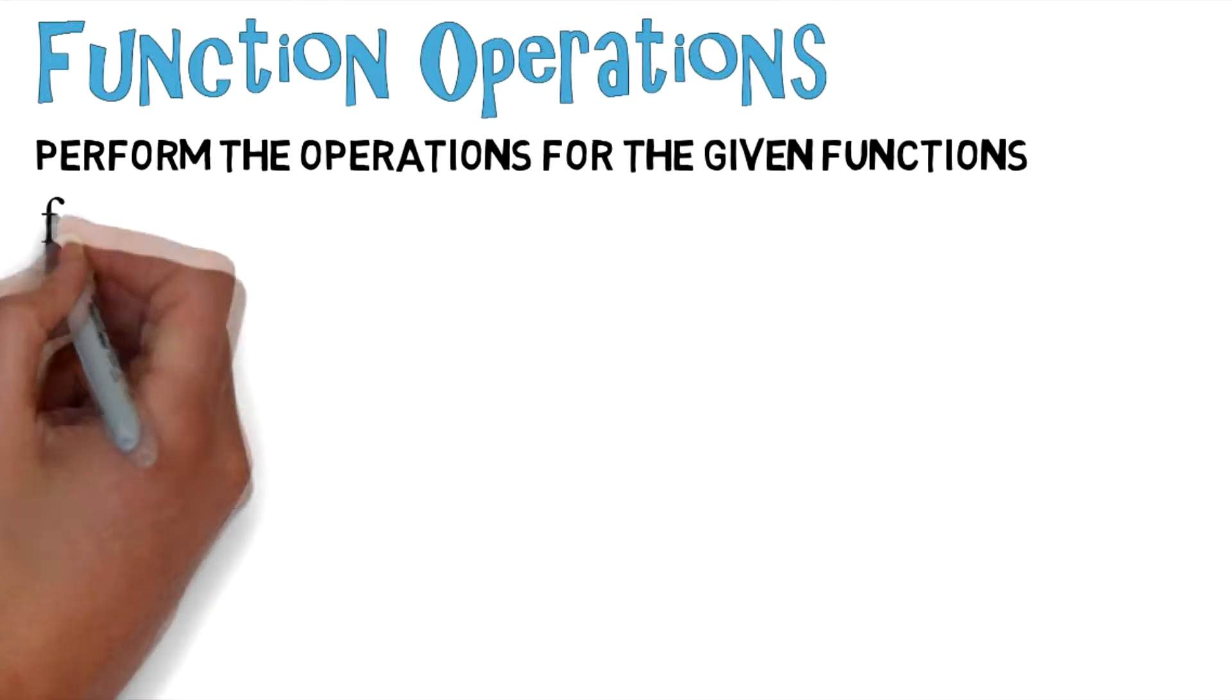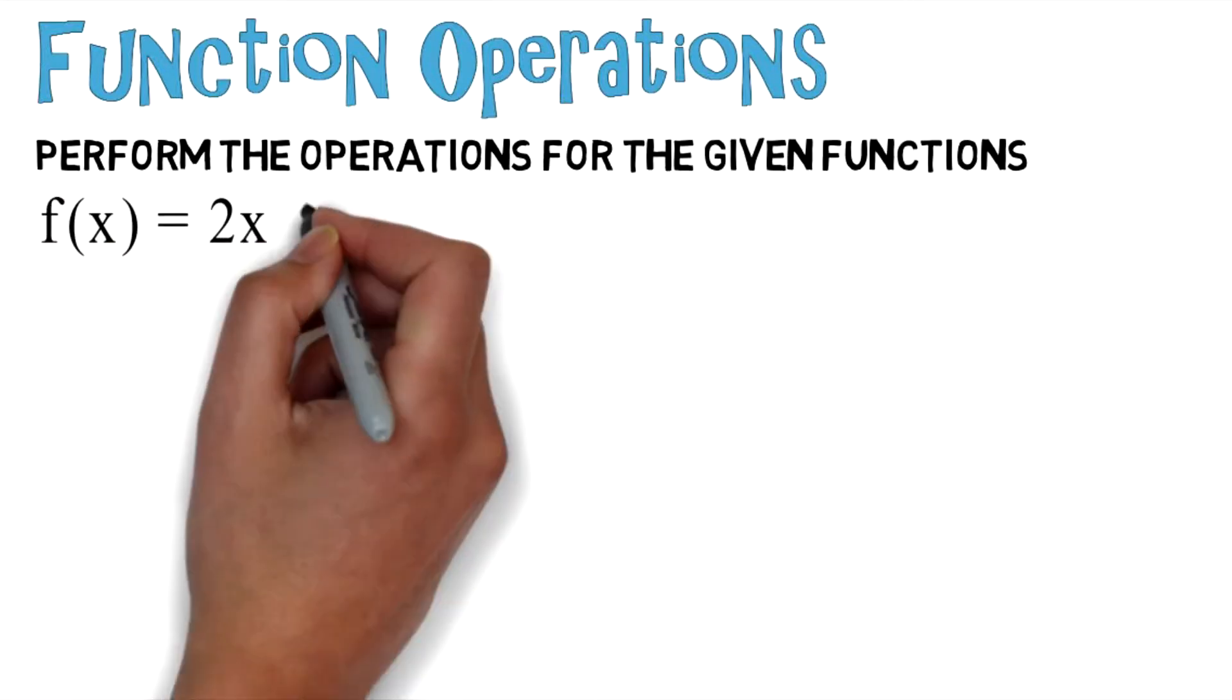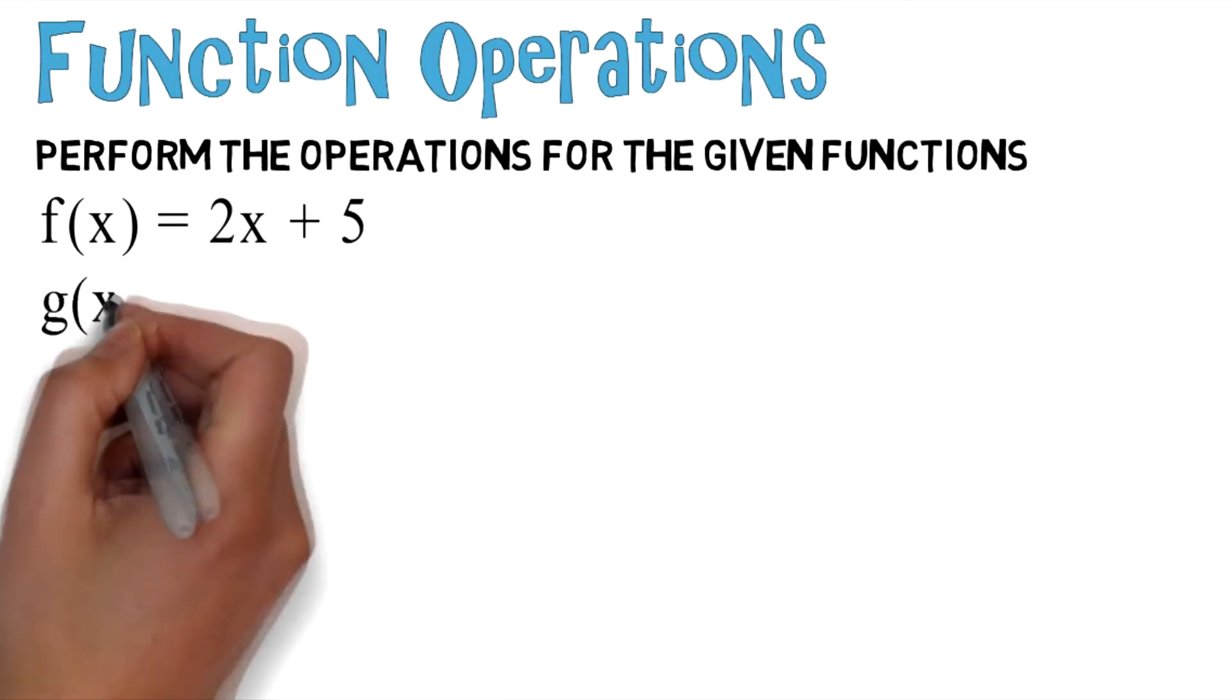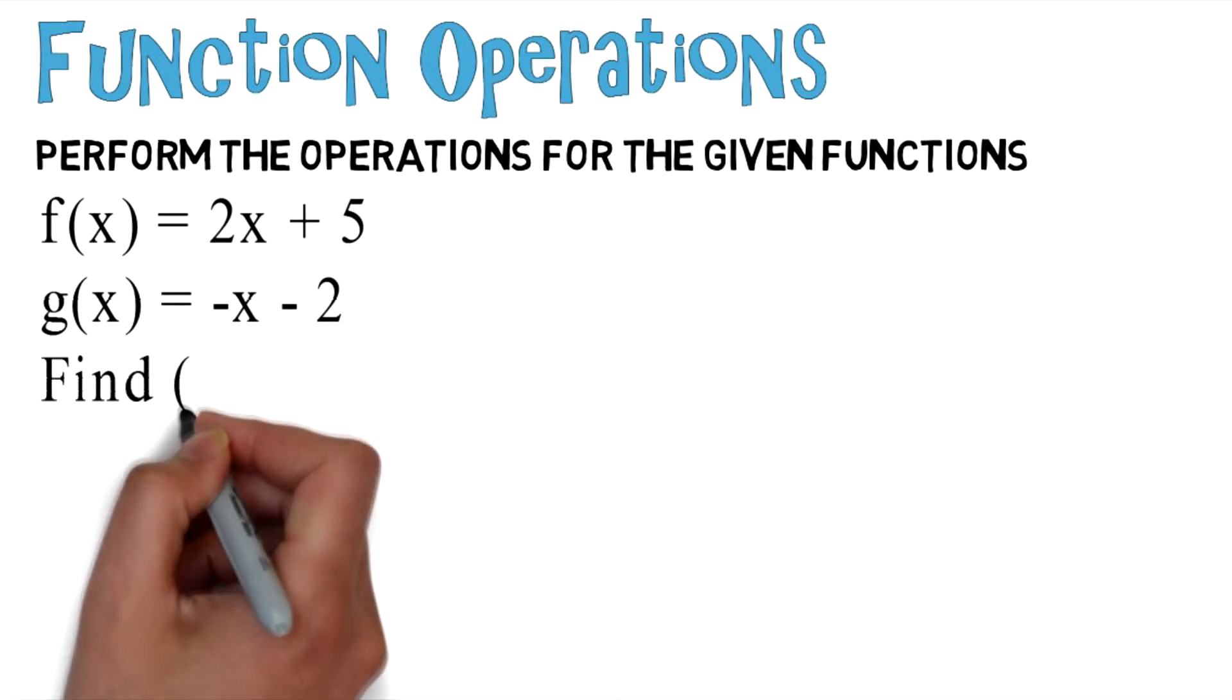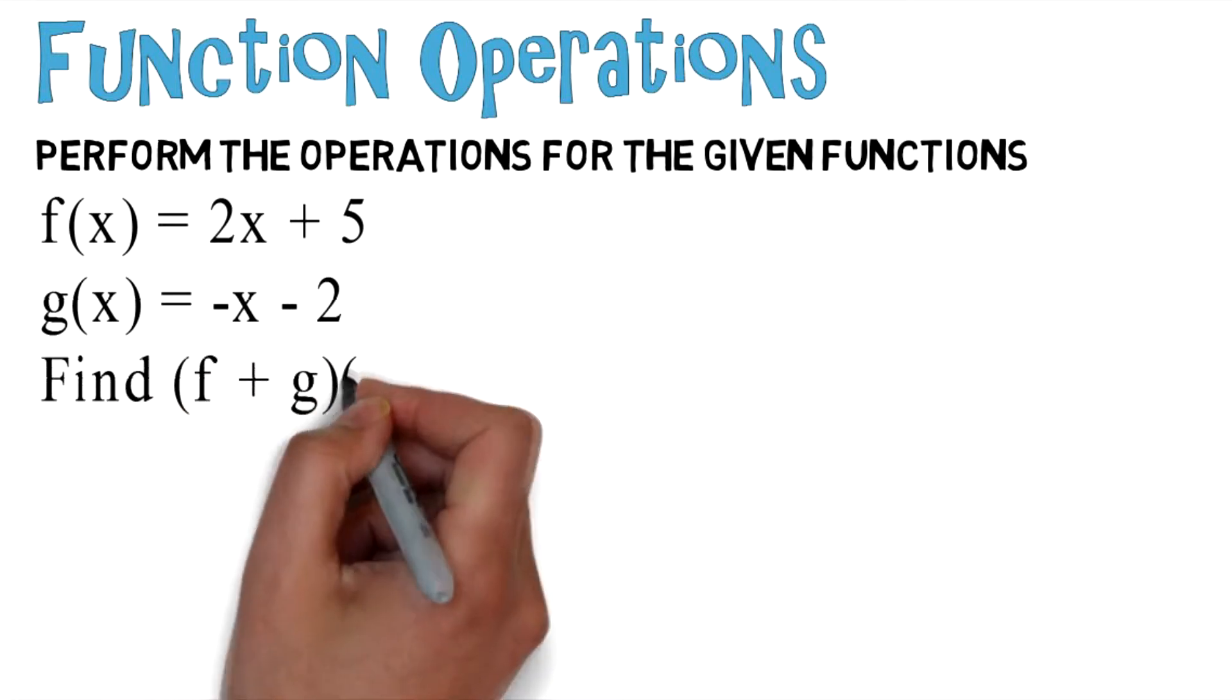And you're given f of x equals 2x plus 5, g of x equals negative x minus 2. Find f plus g at 5.